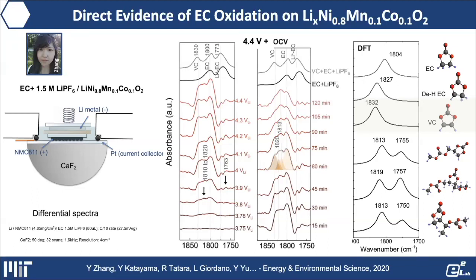VC is soluble, so it moves away from the electrodes. With increasing time, we see a peak at around 1813 cm⁻¹ increase, corresponding to what we computed for various oligomers formed due to oxidative dehydrogenation of EC molecules. Using this technique, you can observe how different species form, and also determine which species diffuse away and which remain stuck on the surface.